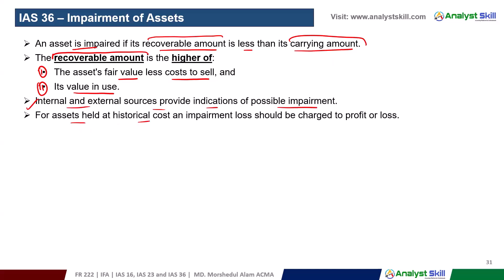For assets held at historical cost, an impairment loss should be charged to profit and loss.